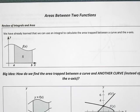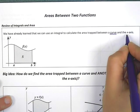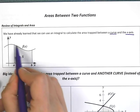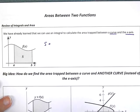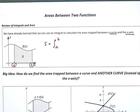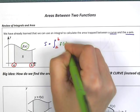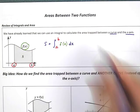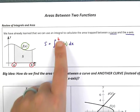Let's review what we already know. We can use an integral to calculate the area trapped between a curve and the x-axis. In this picture the curve would be f of x and the x-axis would be down here. To find the area of S we would set up an integral from a to b — those are the x-values the area is trapped between — with f of x dx inside.